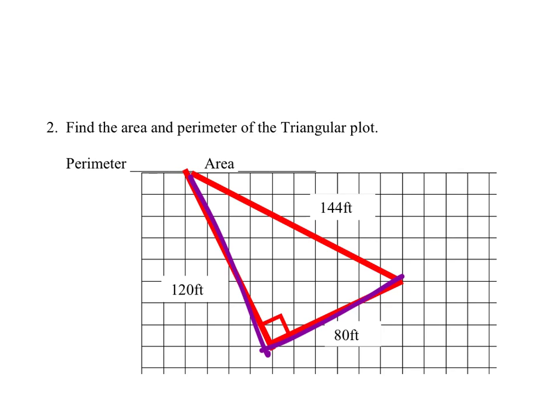So the area of a triangle, hopefully we remember, is one half times the base times the height. Because it's really just half of a rectangle or a parallelogram. And when we look at the base and the height, we're looking at the two parts that are creating a 90 degree angle.